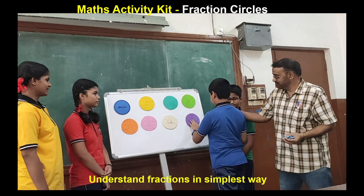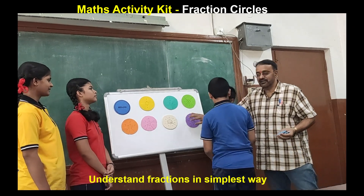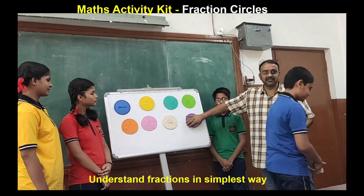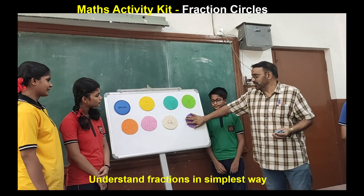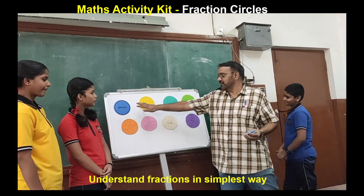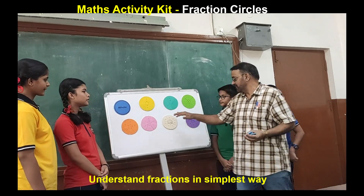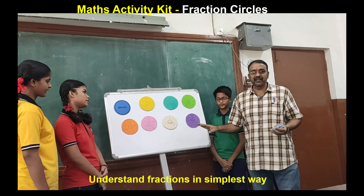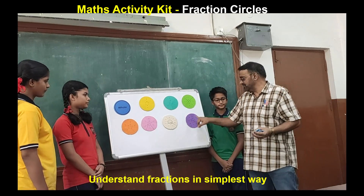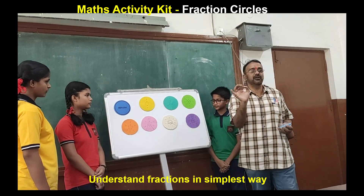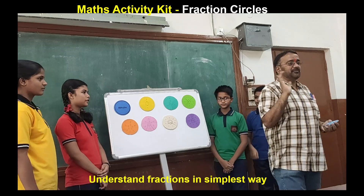So we got one full circle. It is divided into 8 equal parts, and each part is equal to 1 by 8.